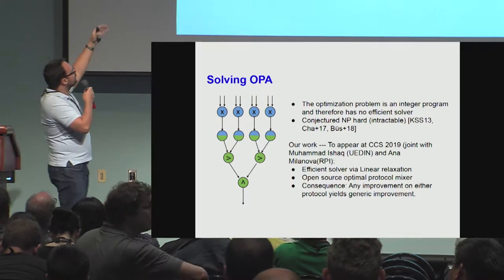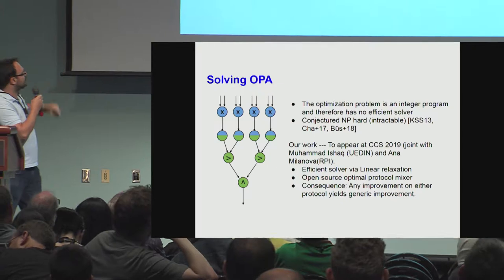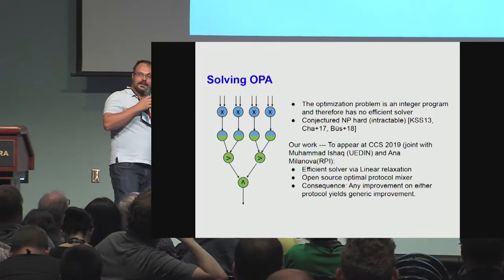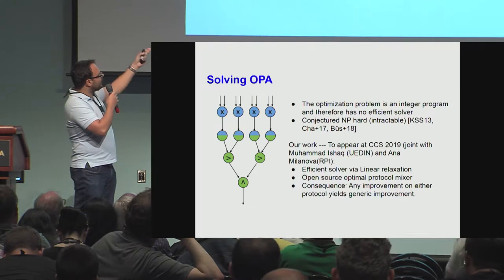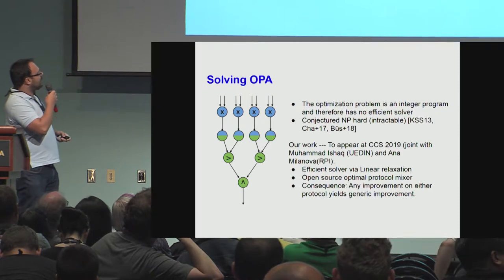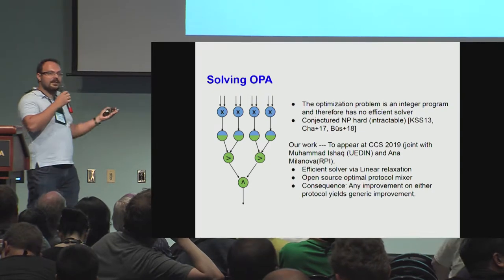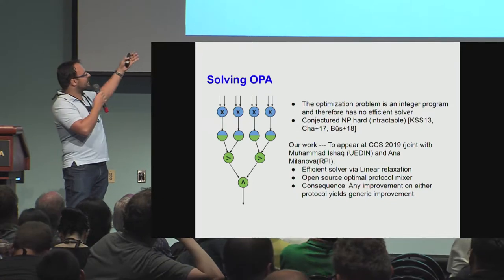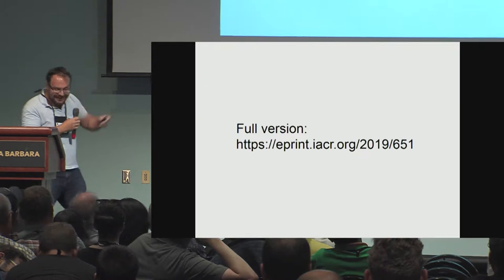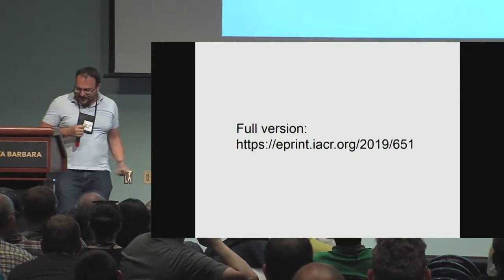This problem was conjectured to be NP-hard. What we proved in this work, which is to appear at this upcoming CCS, is that actually you can solve it. The LP relaxation of this problem has an integral solution, and therefore it can be solved efficiently. We have an open-source optimal protocol mixer, and this means that you can take arbitrary protocols — our mixer is independent of the actual implementation. So at this point, as a Greek, I would just say: OPA!